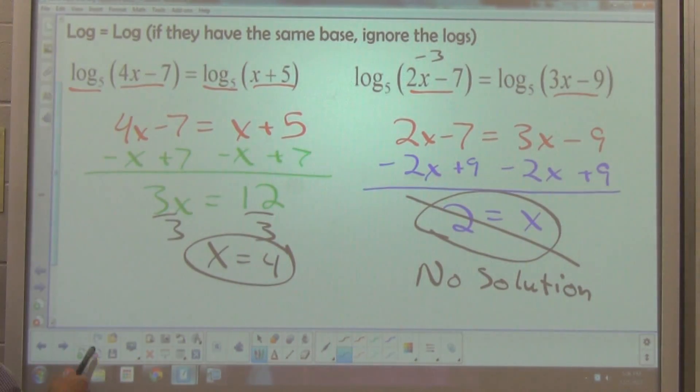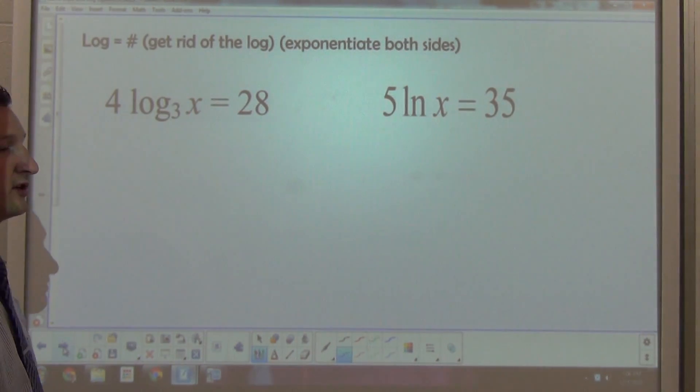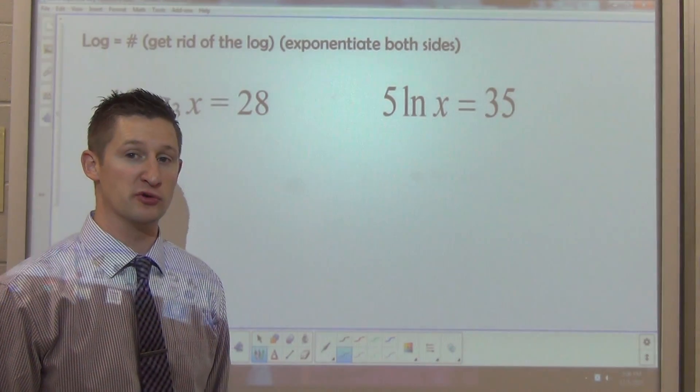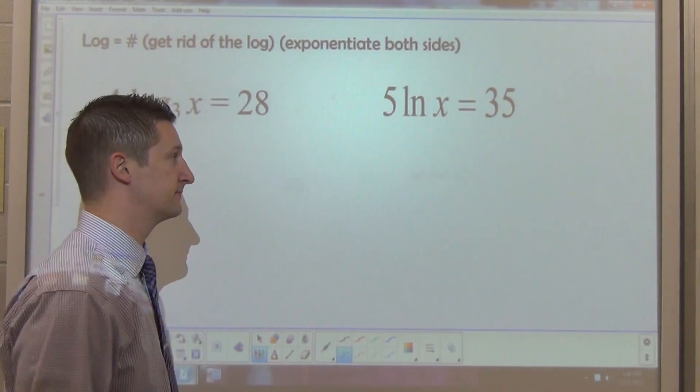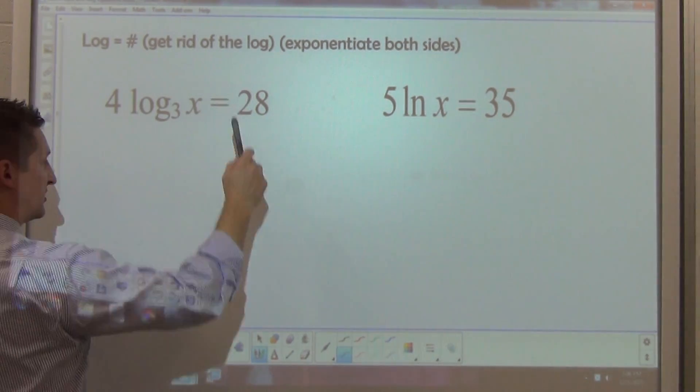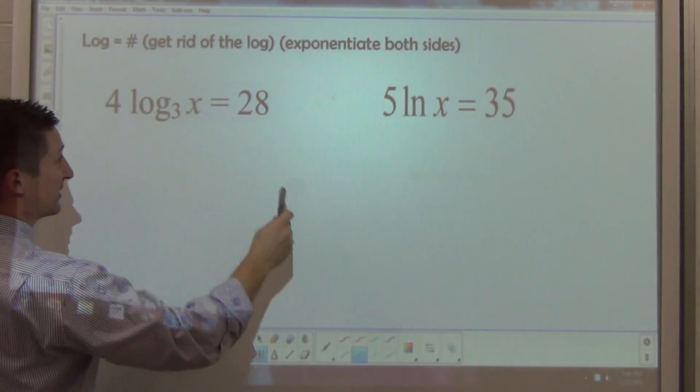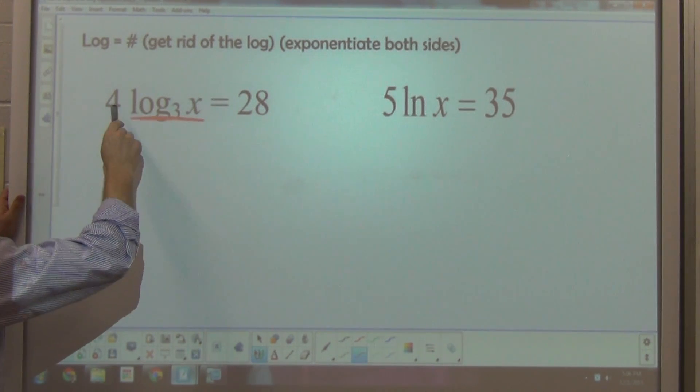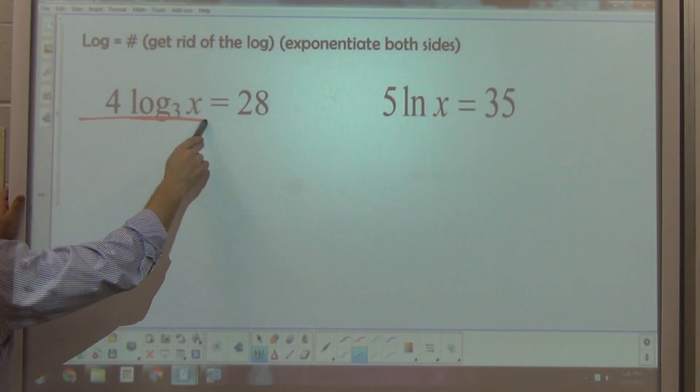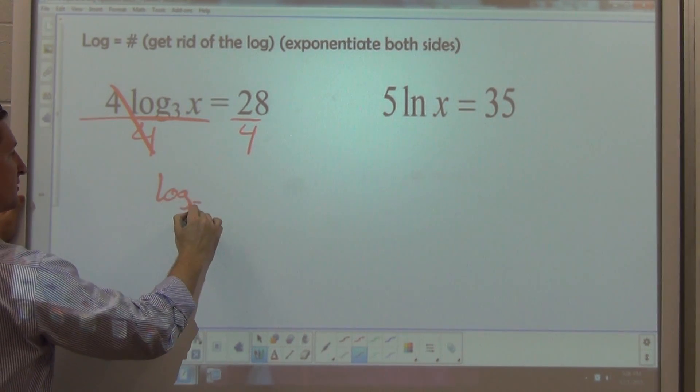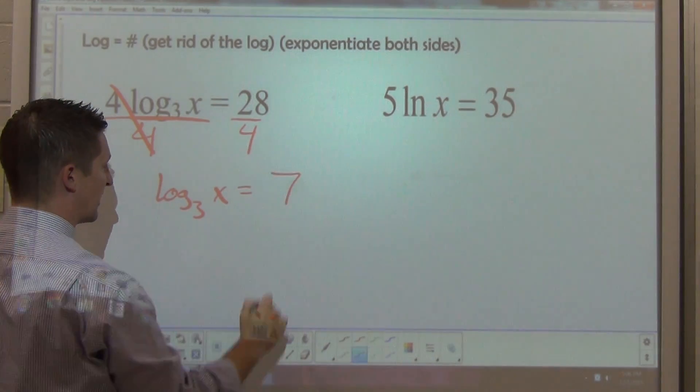The next kind of logarithmic equation we're going to run into is one where there's just a logarithm on one side. So we're going to try and get rid of that logarithm by using an inverse property. For example, 4 times the log base 3 of x equals 28. Now before I do anything to get rid of the logarithm, I need to get the logarithm by itself. 4 times this logarithm, well let's get rid of the 4. Let's divide both sides by 4. So that gives me the log base 3 of x is equal to 7.